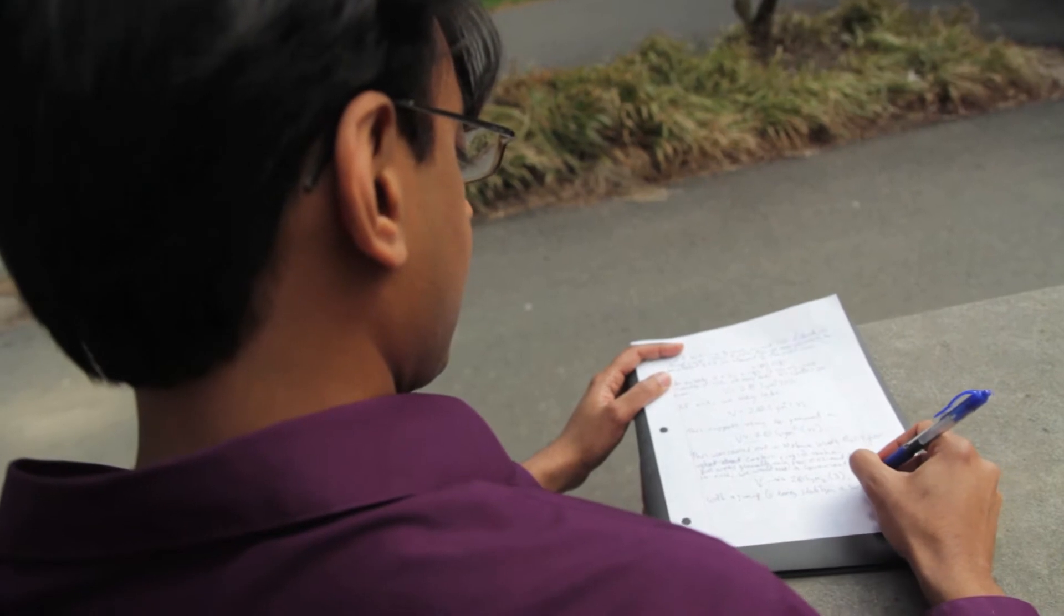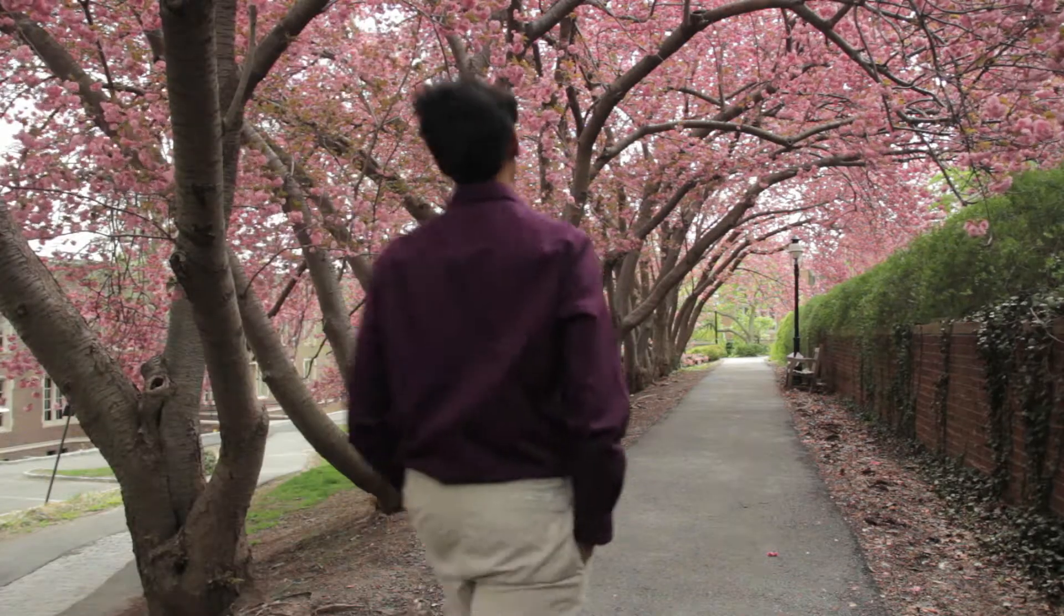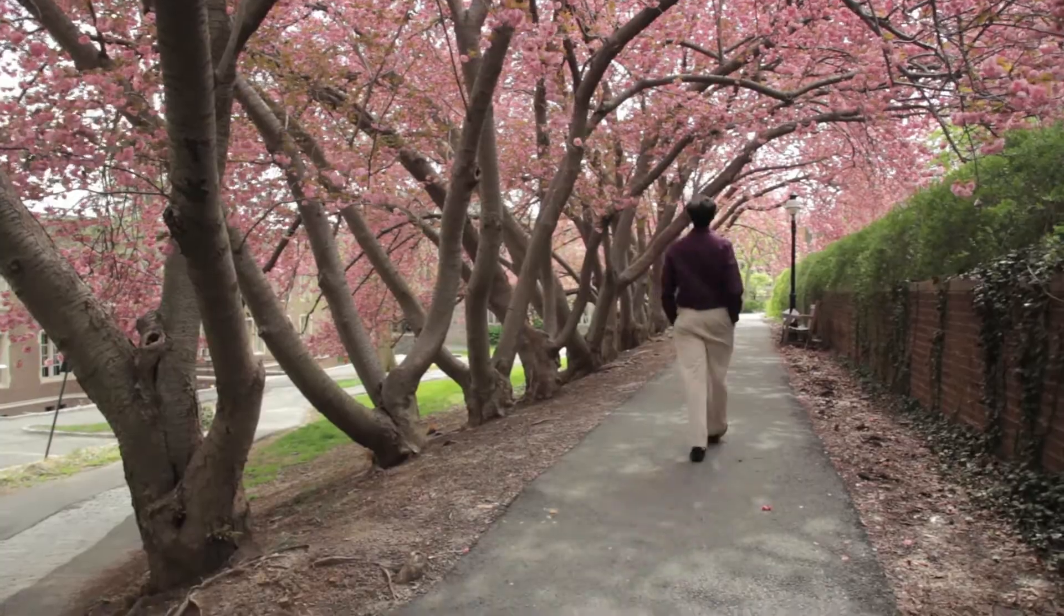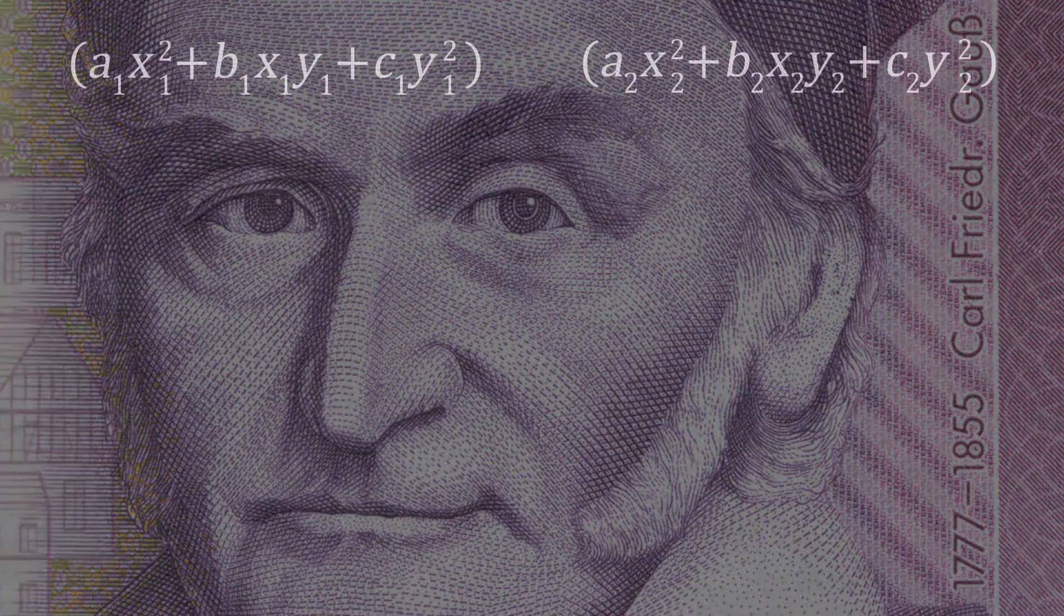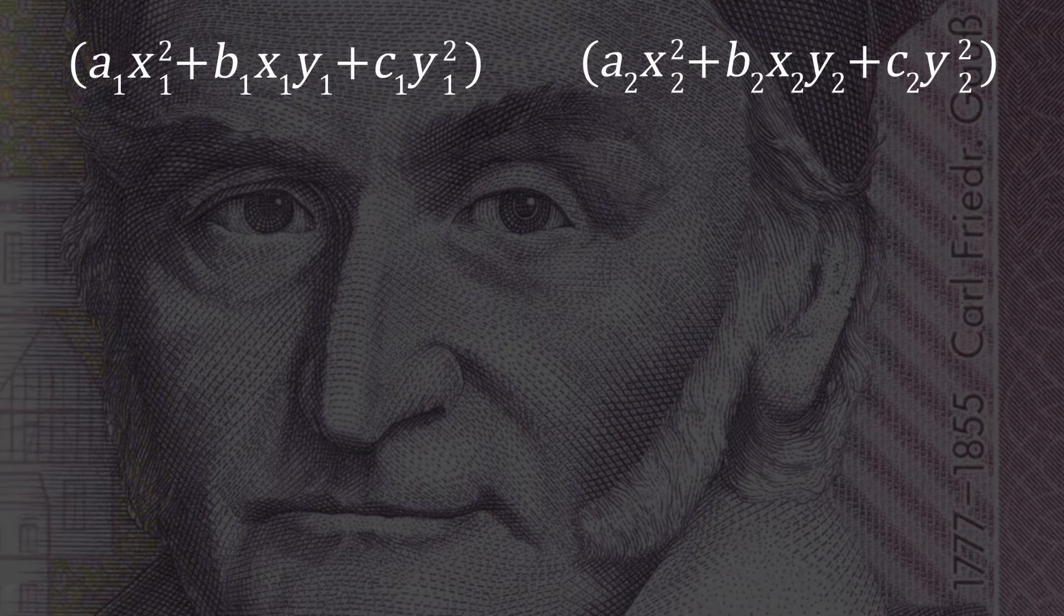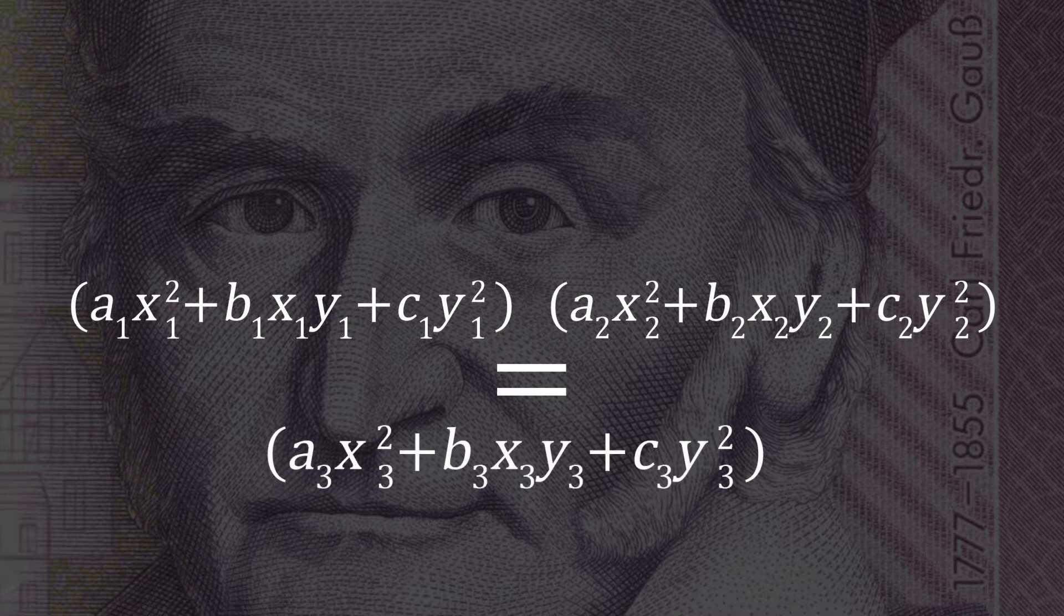One of the most exciting moments of discovery for me occurred when I was a graduate student at Princeton. Those days I had been thinking about Gauss composition. Gauss composition is a method by which one can take two quadratic expressions in two variables and combine them to produce a third such quadratic expression.